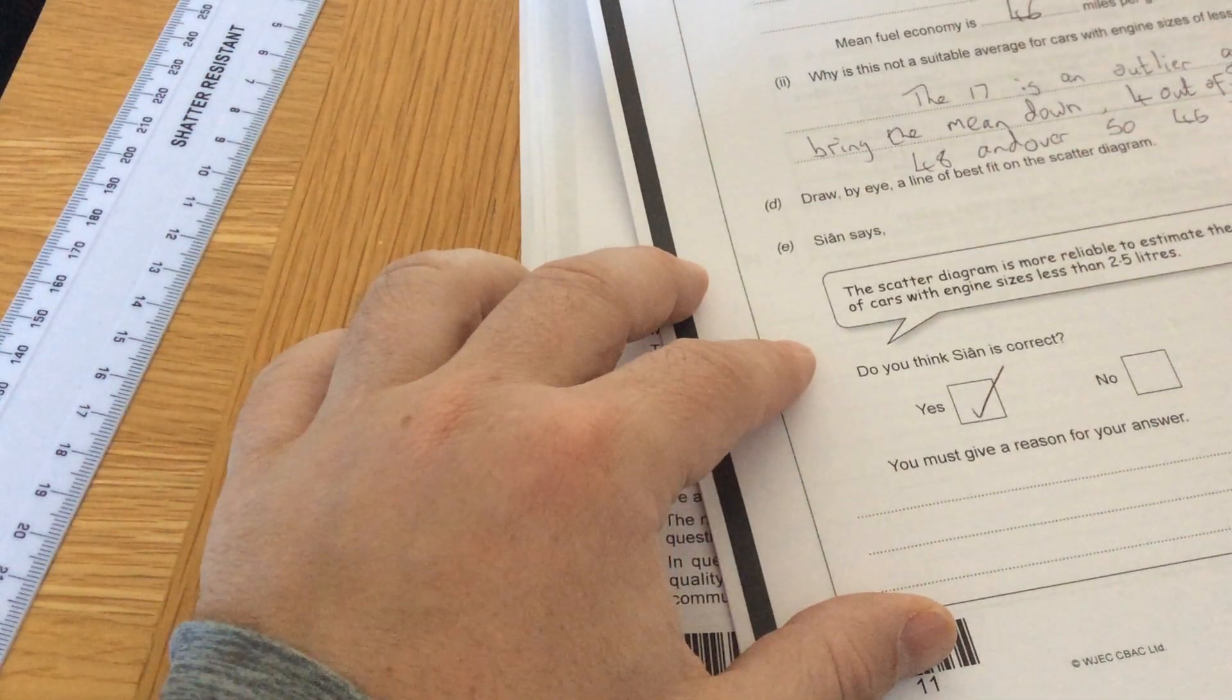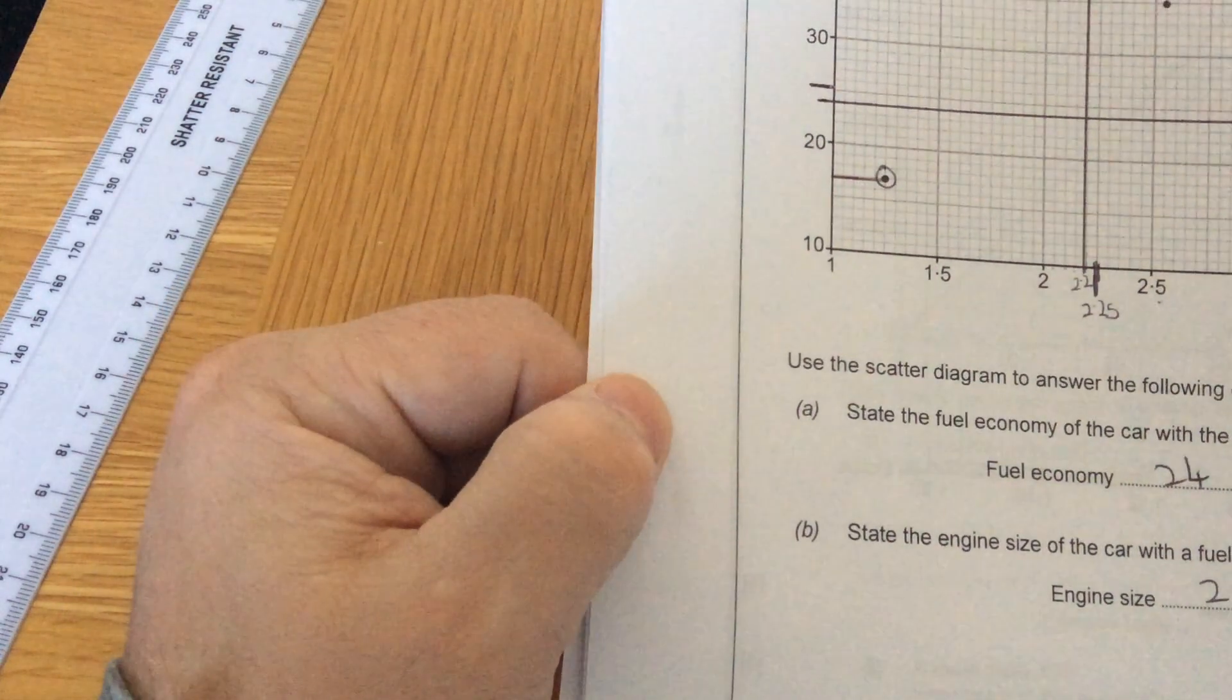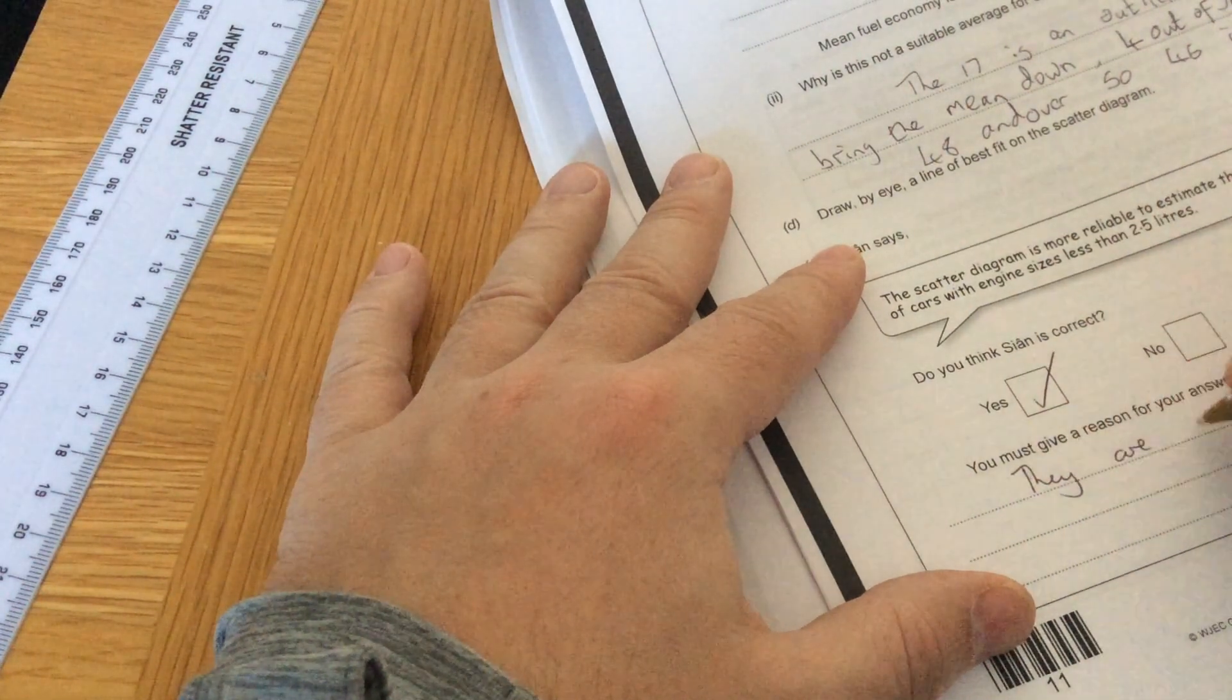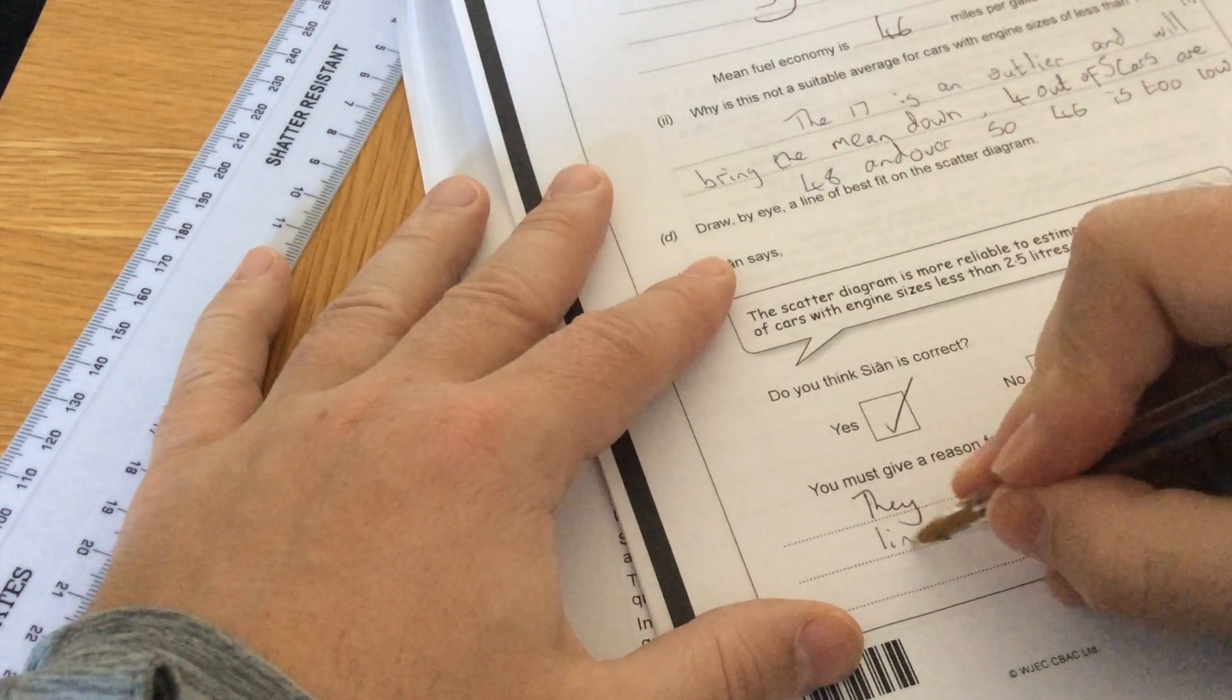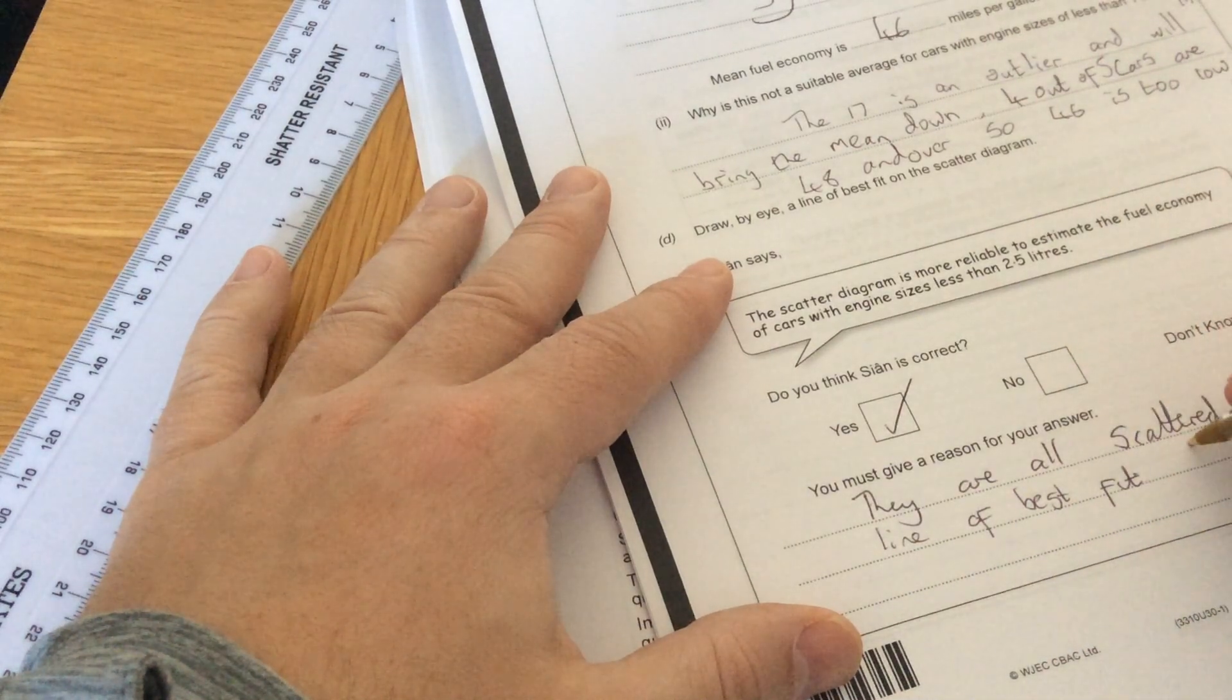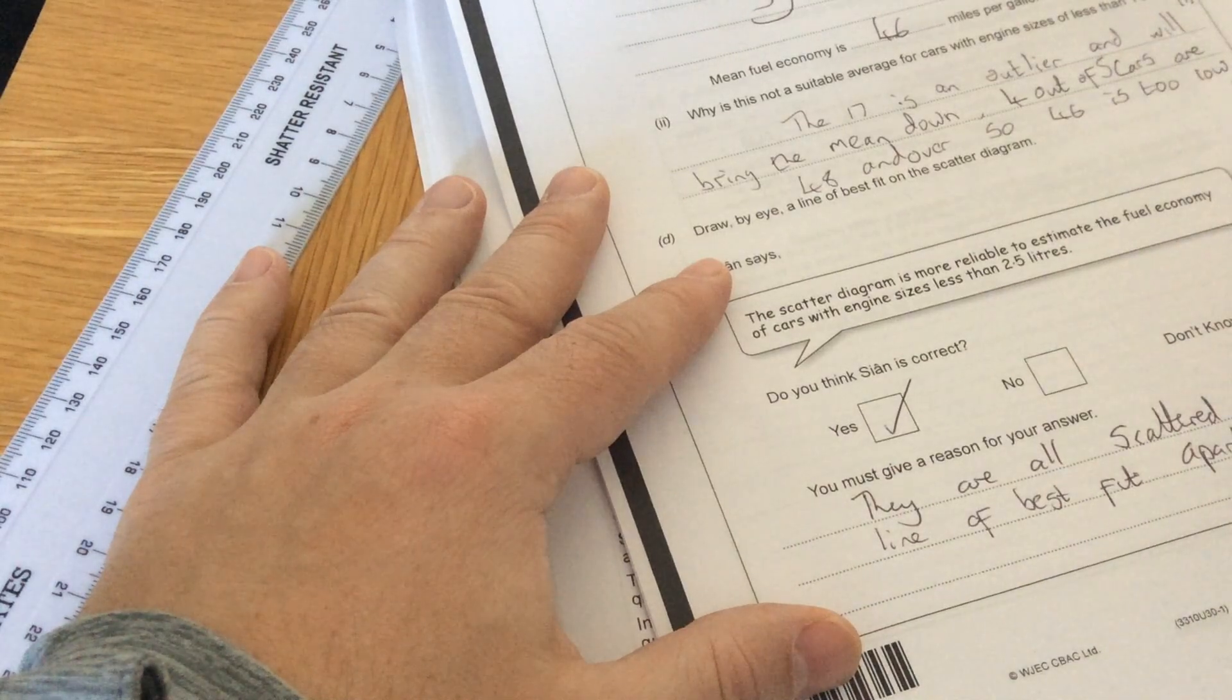And the reason being, they are all scattered about the line of best fit, apart from one outlier.